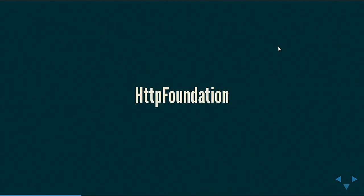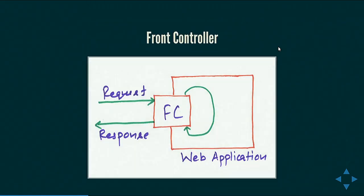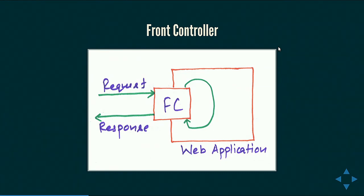Let's start with HTTP Foundation. Almost every web application — all communication on the worldwide web — happens using HTTP. A web client sends a request to a server, and the server sends a response back. Most web frameworks implement a design pattern called the front controller, which takes the request, sends control to the application, and the application must send a response back, which the front controller then sends to the web client. The front controller maintains control of the request-response flow. Drupal has its own front controller in both Drupal 7 and Drupal 8 — it's index.php — and all requests are routed through it.